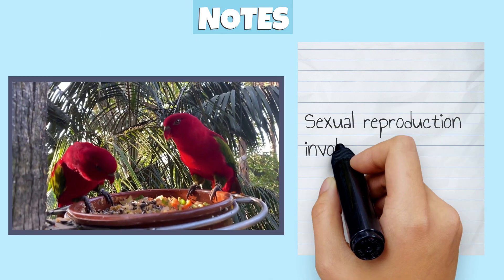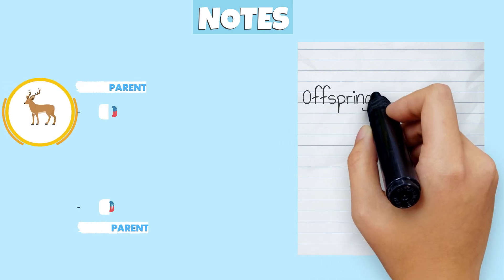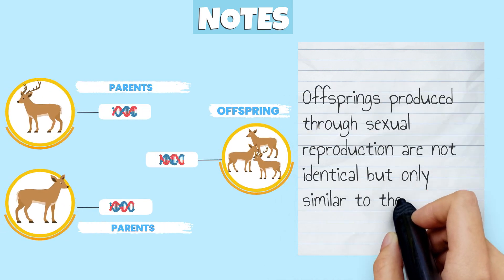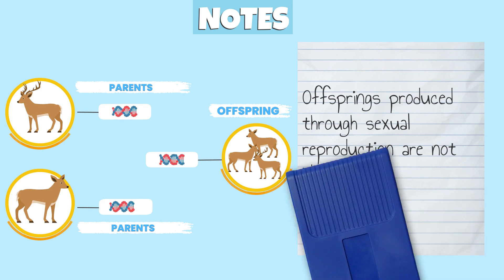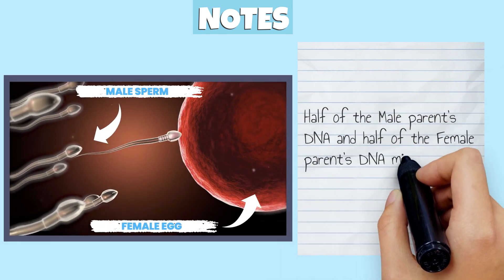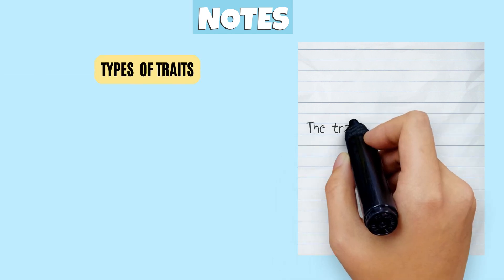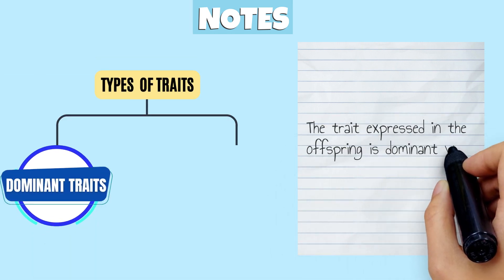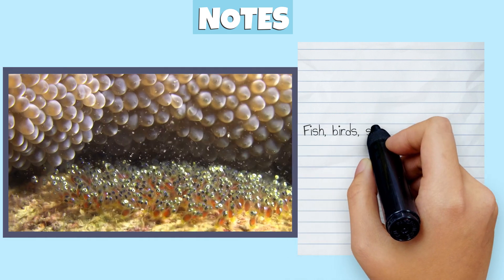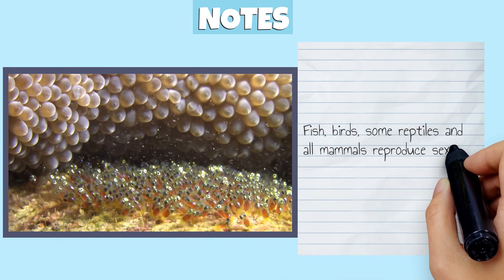Sexual reproduction involves two parents, male and female. Offspring produced through sexual reproduction are not identical but only similar to their parents. Half of the male parent's DNA and half of the female parent's DNA mix and are passed on to the offspring. The trait expressed in the offspring is dominant while the other is recessive. Fish, birds, some reptiles, and all mammals reproduce sexually.